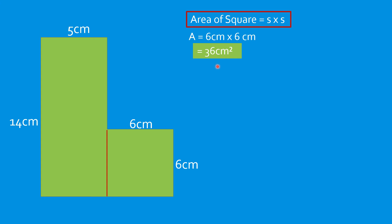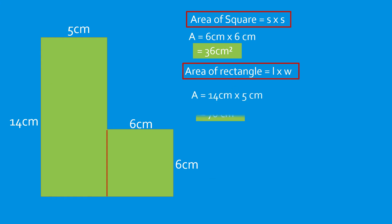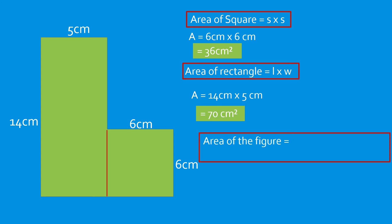Next, find the area of the rectangle: length times width, which is 14 times 5, equal to 70 square centimeters. Now to find the area of the composite figure, add both areas: 36 square centimeters plus 70 square centimeters equals 106 square centimeters.